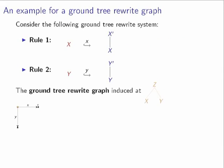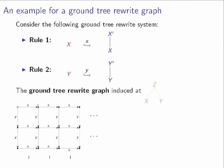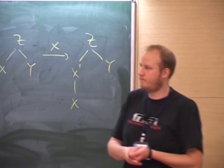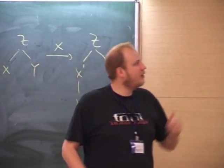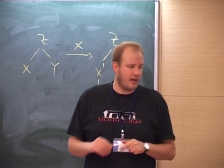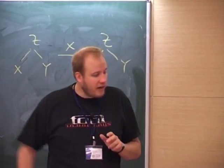If you apply the other rule, you go to the same tree where Y is expanded. If you apply these rules on and on, you basically get the infinite grid. It is well known that the infinite grid has an undecidable MSO theory. So we know there is already a fixed ground tree rewrite graph whose MSO theory is undecidable.